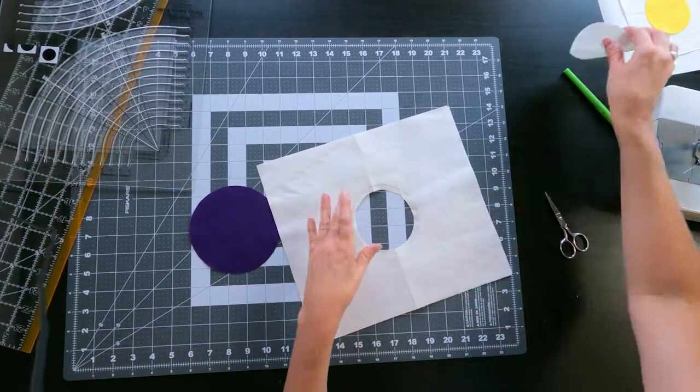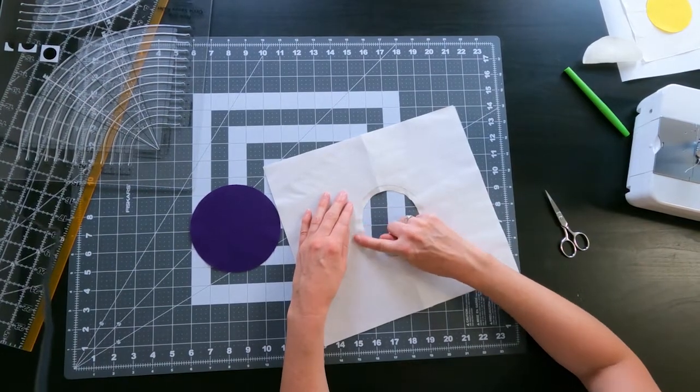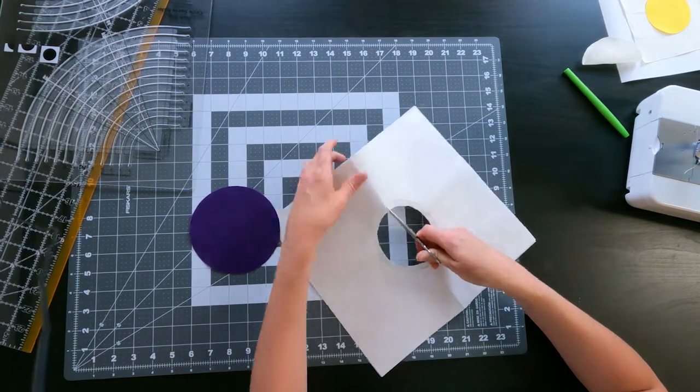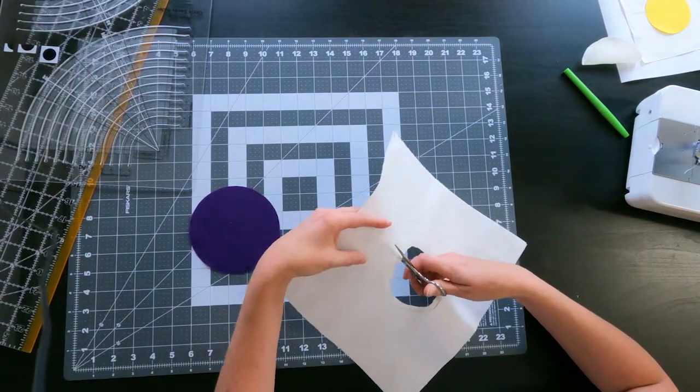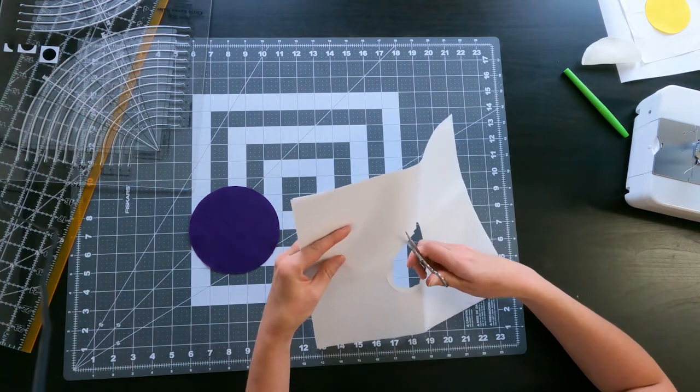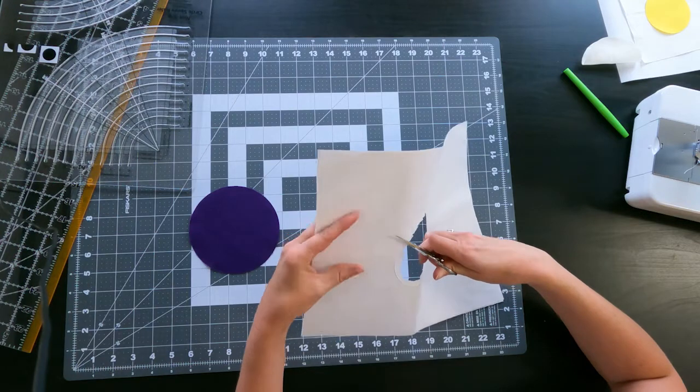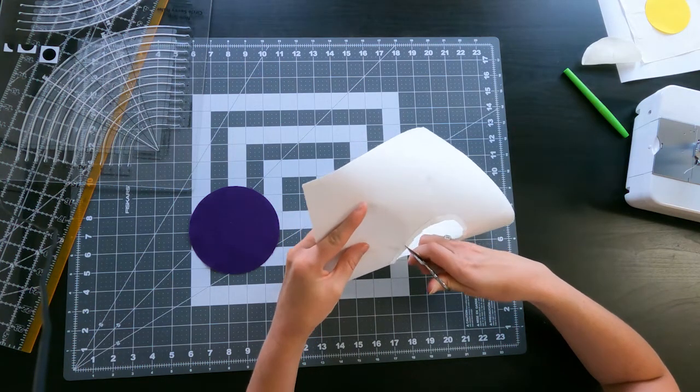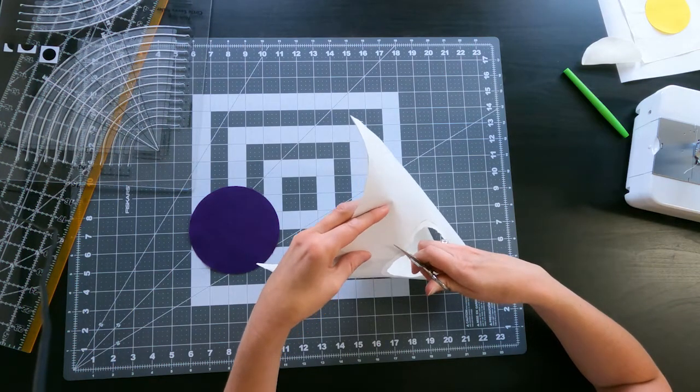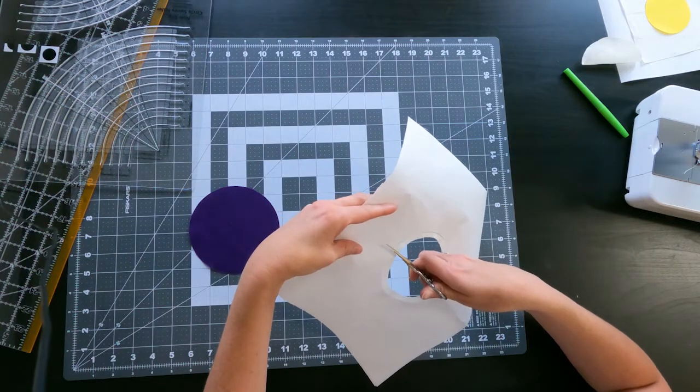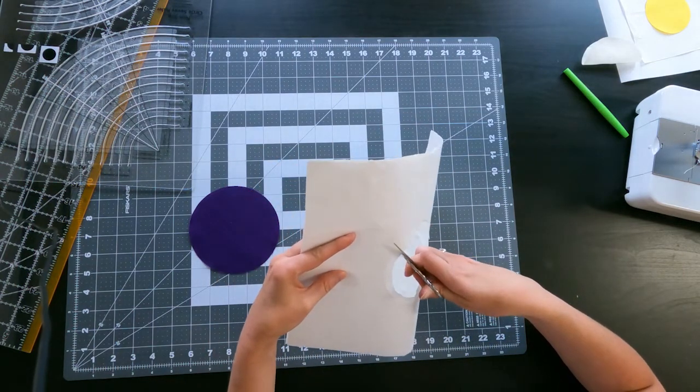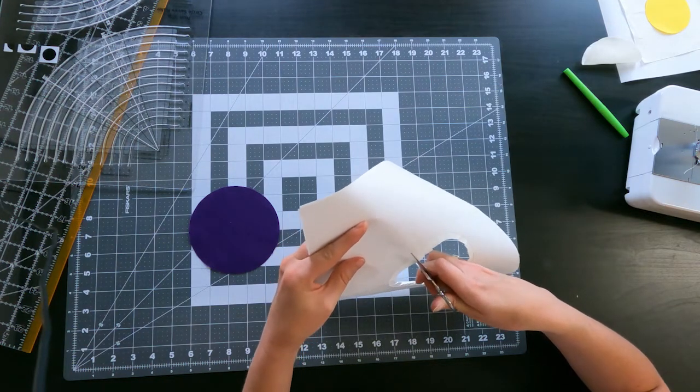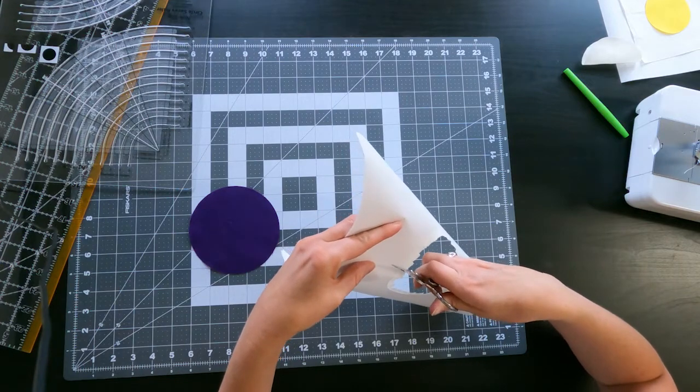So this is where our circle is going to show through. Now before we can actually sew, we need to clip these so that they're going to fold over for us. Clip them up to that sew line. That's really what this freezer paper is here for is to give us that sew line so we can make sure that we're not going too far over.